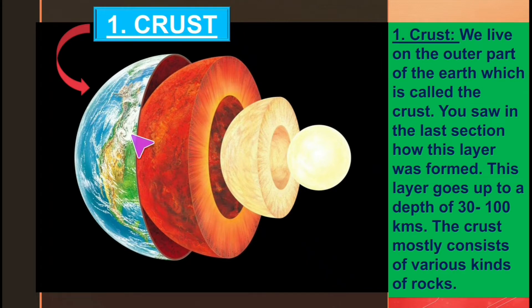The outer portion that we live on is the crust. This layer was formed as described previously, and it goes up to a depth of 3200 kilometers. The crust mostly consists of various kinds of rocks. The outermost layer of earth is known as crust and we live on that crust only.